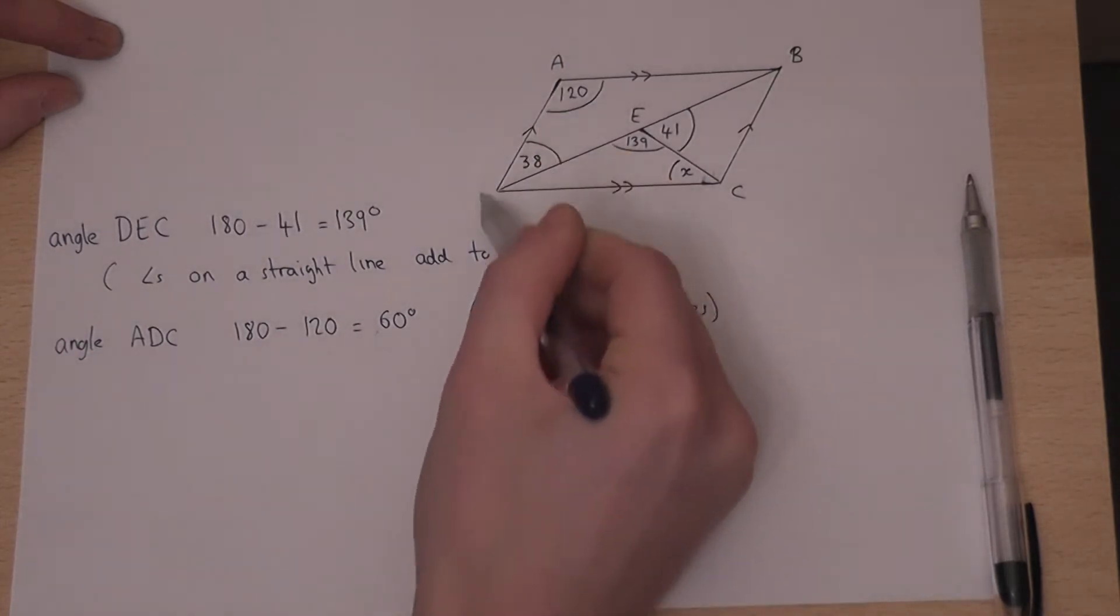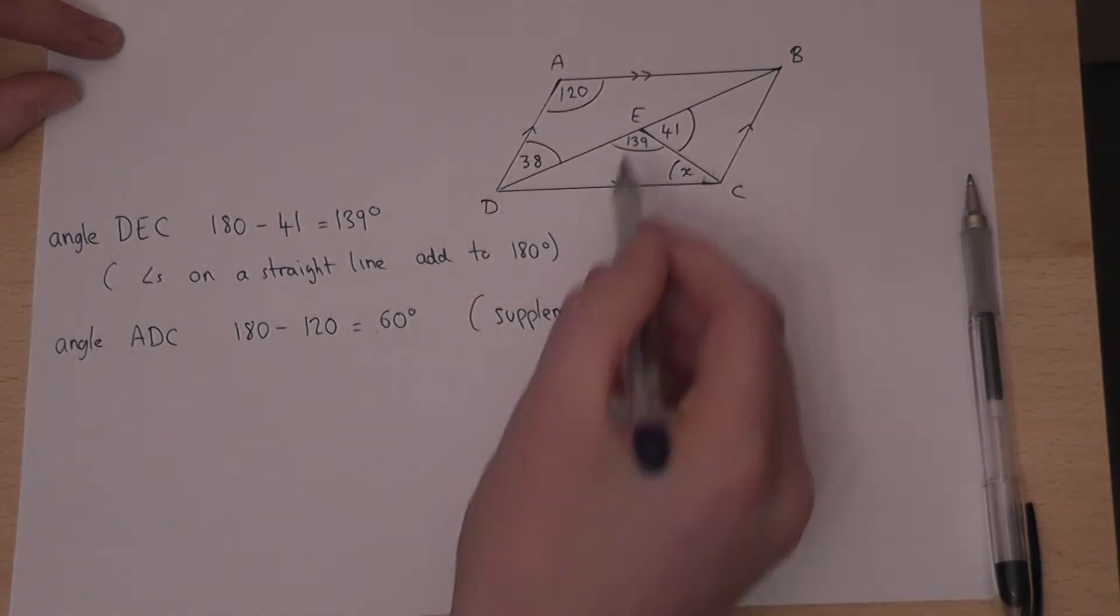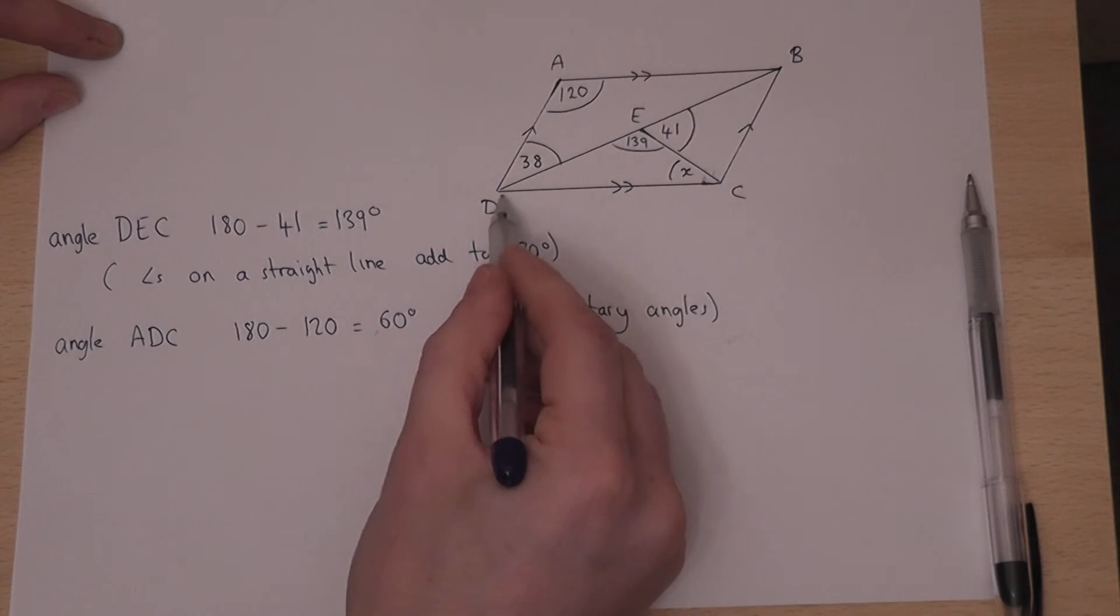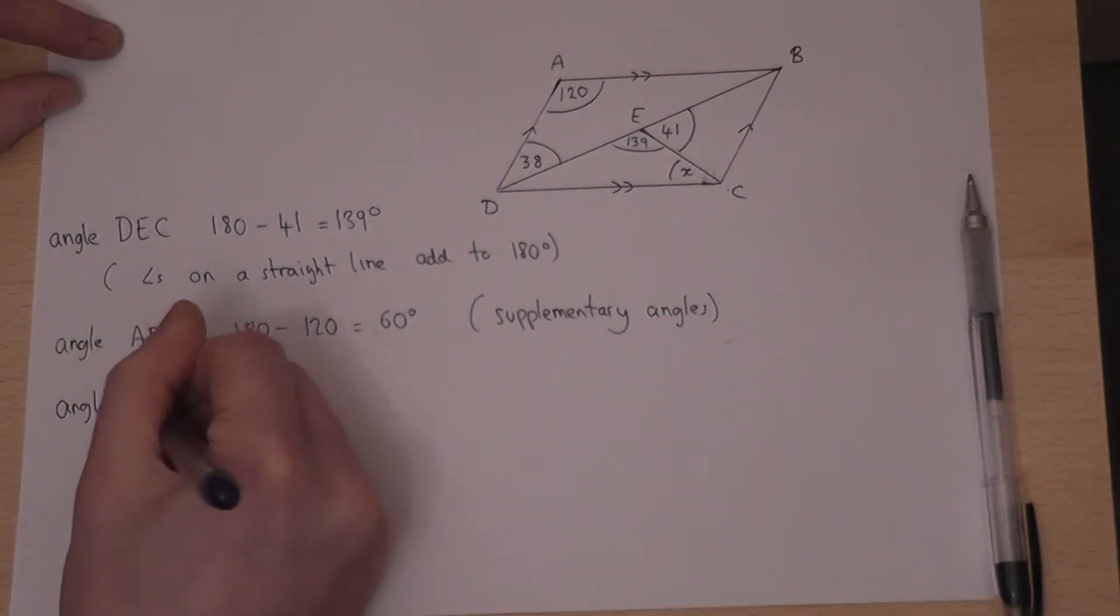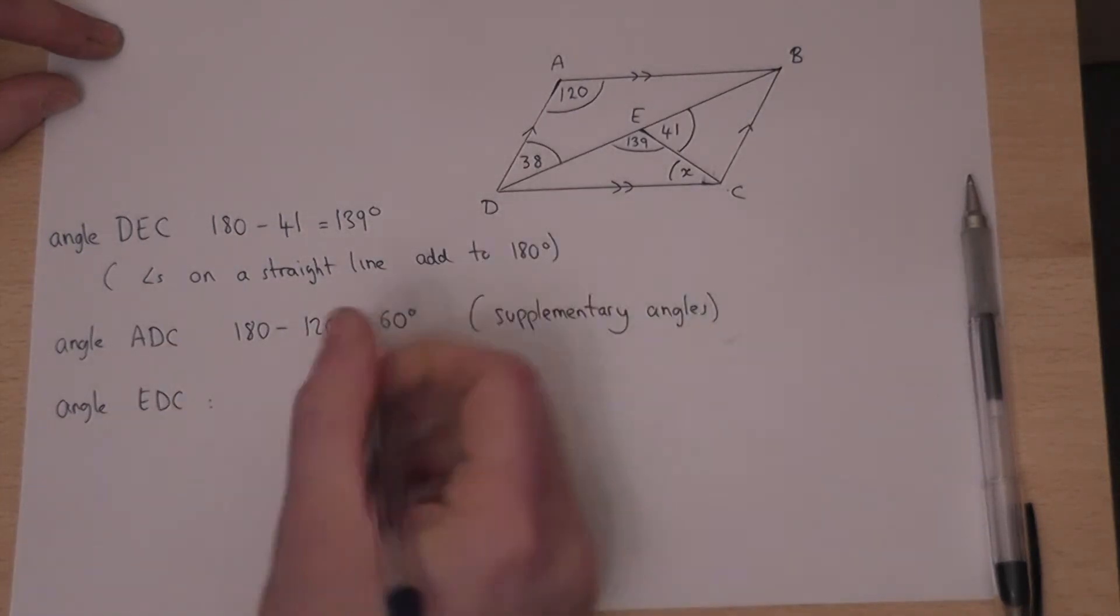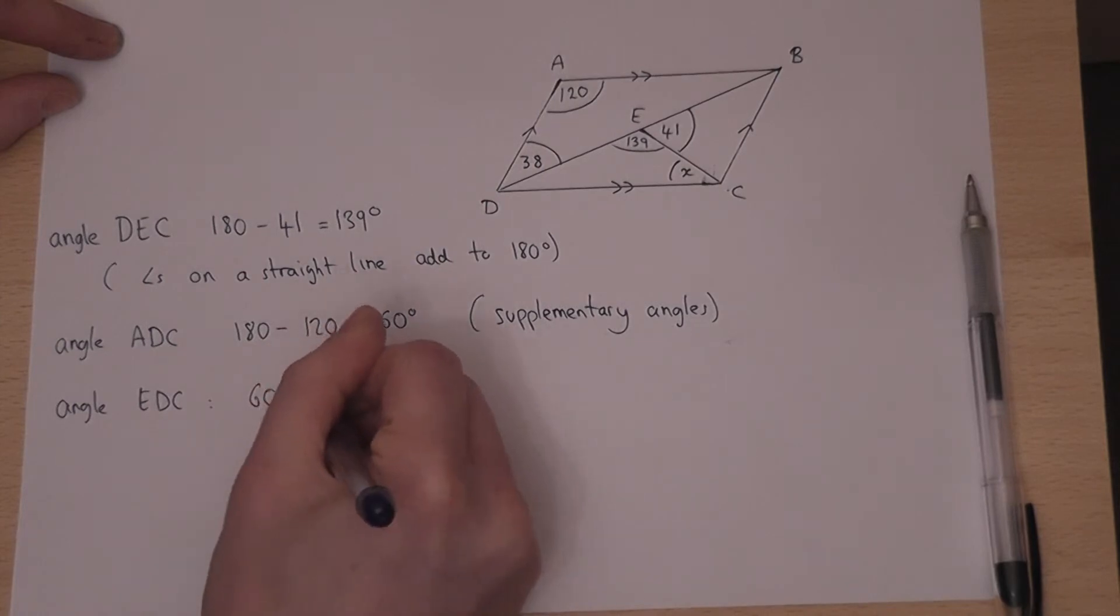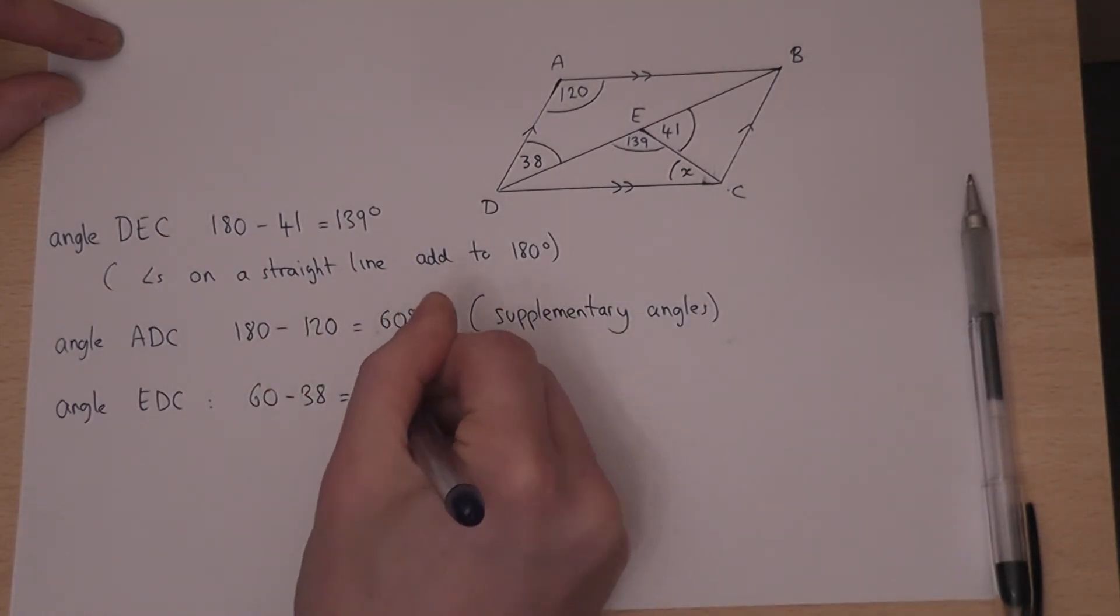So I know that entire angle there is 60. So I can therefore find angle EDC. Angle EDC must be 60 take away 38, which is 22 degrees.